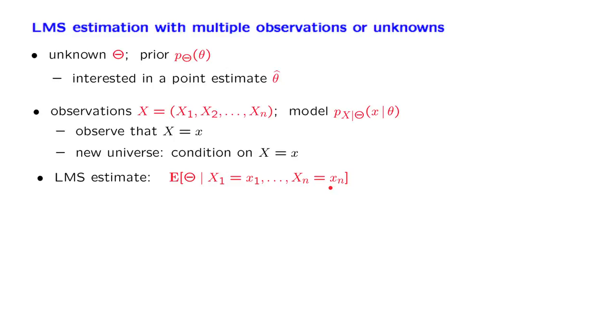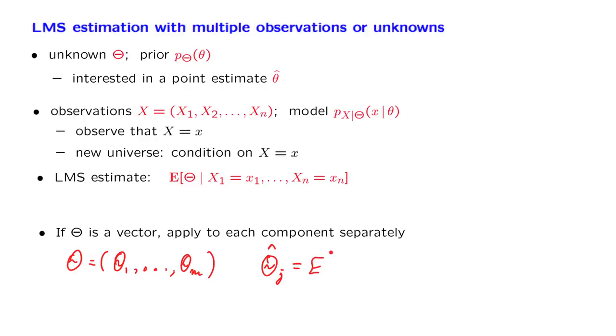Now, what if we have multiple parameters? Once more, the argument is exactly the same. We obtain that the optimal estimate of any particular parameter is the conditional expectation of that parameter given the observations. If our parameter vector consists of several components, then the LMS estimate of the jth component is simply the conditional expectation of this parameter given the data we have obtained. This gives us the most general solution to the problem of least mean squares estimation when we have multiple parameters and multiple observations.